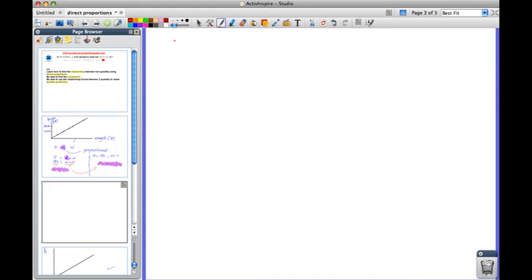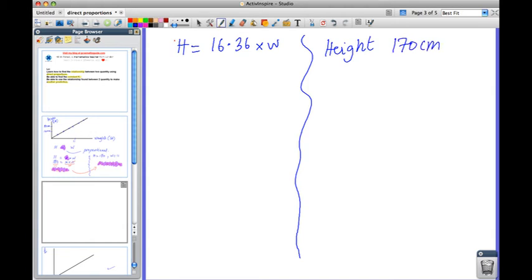So we found that the formula is H is equal to 16.36 times W. So now let's say I knew that someone had the height of, shall we say, 170 centimeters. And you wanted to know their weight. And you want to make a prediction. Well, you can come to your formula. You can replace the height with 170. So you can say 170 is equal to 16.36 times W.